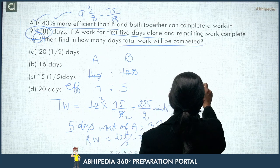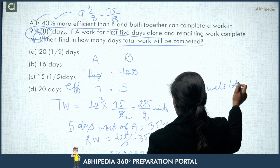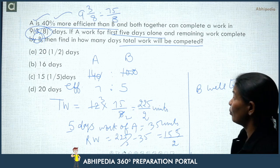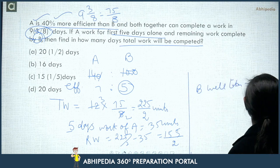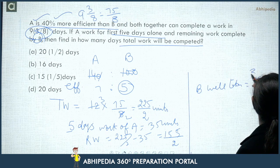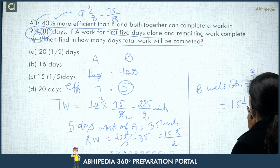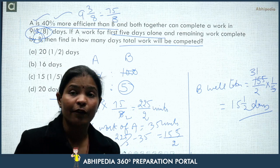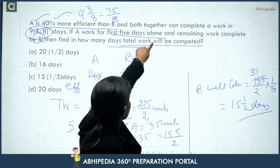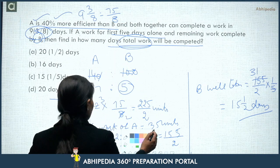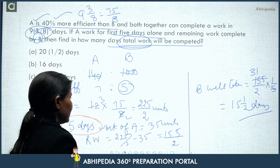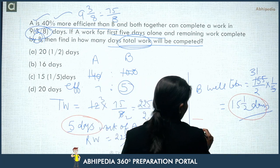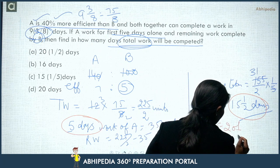Time taken by B to complete remaining work = (155/2) / 5 = 155/10 = 15.5 days. But the question asks for total time: A worked for 5 days, then B worked for 15.5 days. So total time = 5 + 15.5 = 20.5 days = 20½ days.